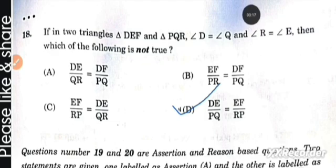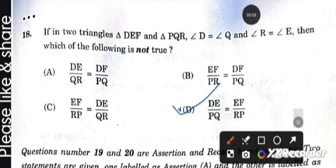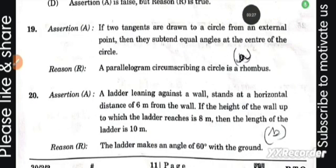Question number 18: In two triangles DEF and PQR, angle D is equal to angle Q and angle R is equal to angle E, then which of the following is not true? This is correct answer option D. Then you have assertion and reason.